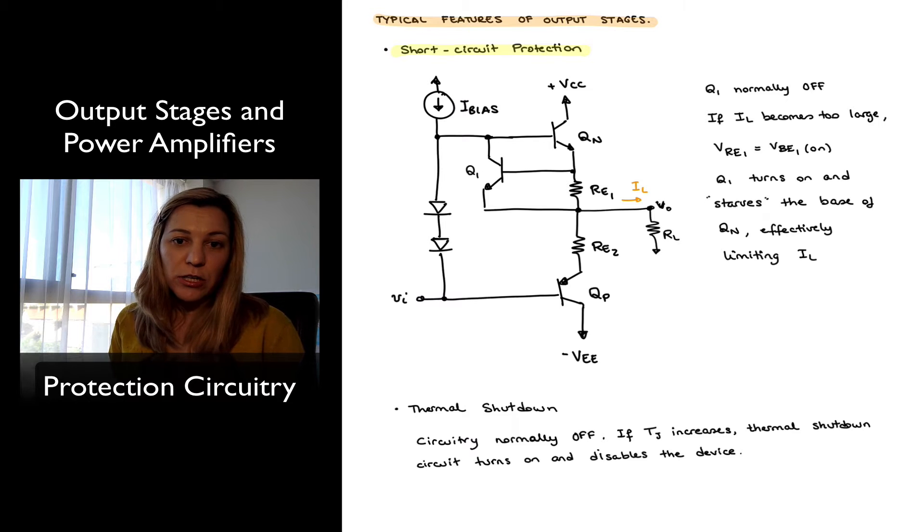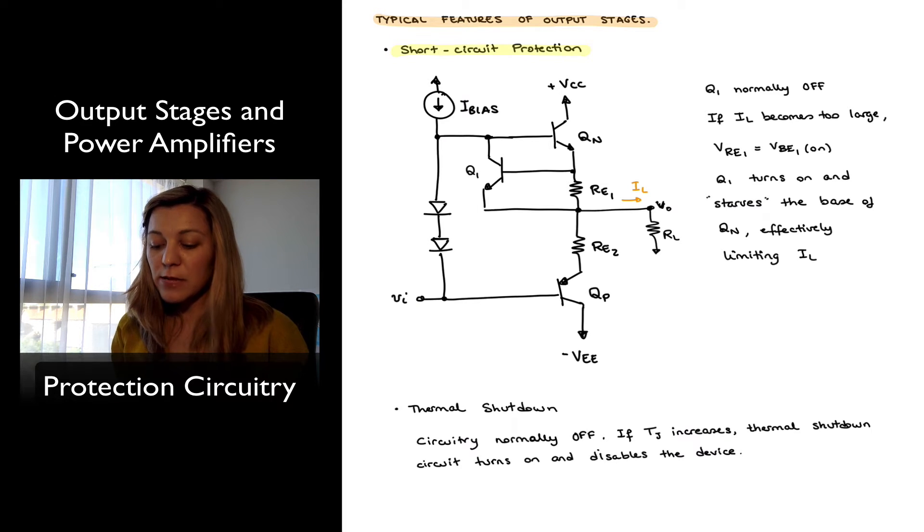In the case of short circuit protection, the way it works, I've represented here a sample circuit. It consists of a sample class AB output stage, which is biased with two diodes in series.